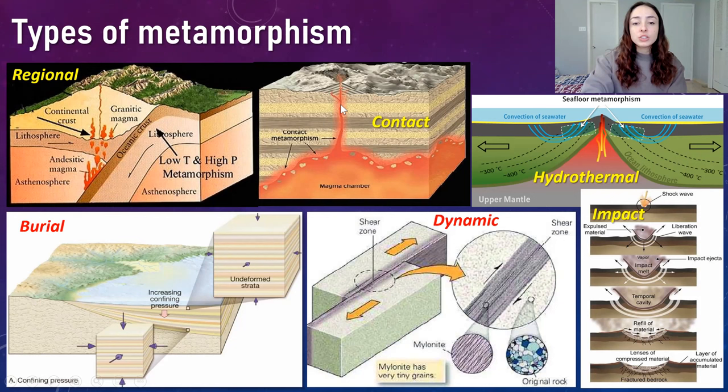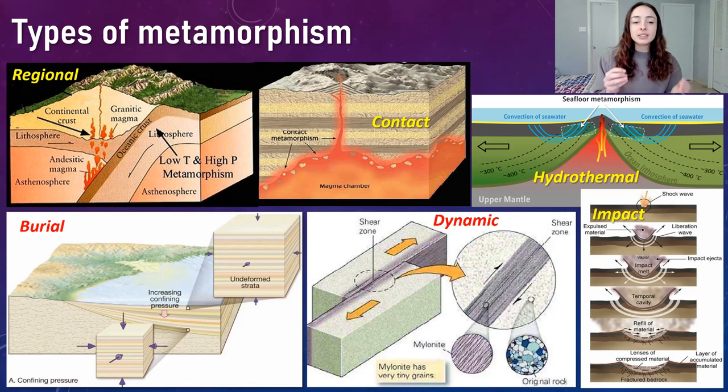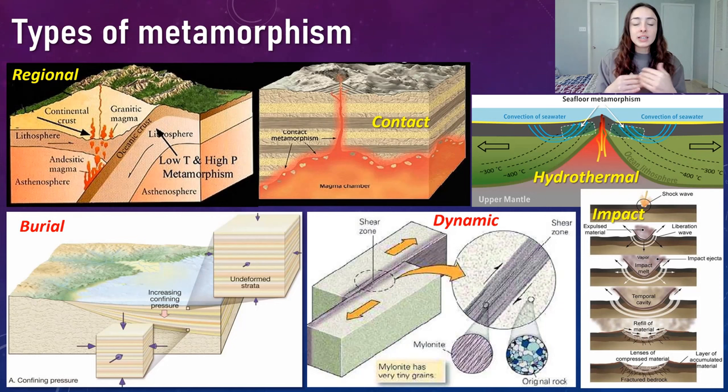Contact metamorphism is typically dominated by heating rather than pressure, so we won't see the same textures as in regionally metamorphosed rocks. Regional metamorphism had high pressures to orient mineral grains in a certain fashion, whereas contact metamorphism — being heating rather than pressure — won't have as much grain orientation. We'll see that when we get to the metamorphic textures part of this video.